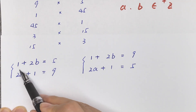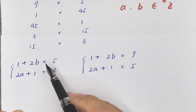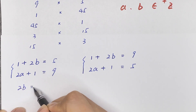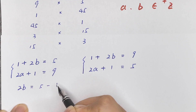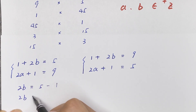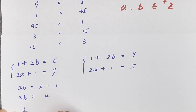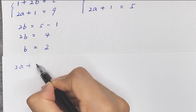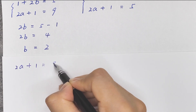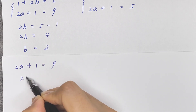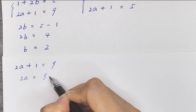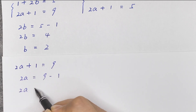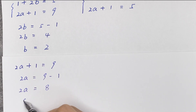For the first case: 1 + 2b = 5, so 2b = 4, giving b = 2. Then 2a + 1 = 9, so 2a = 8, giving a = 4.